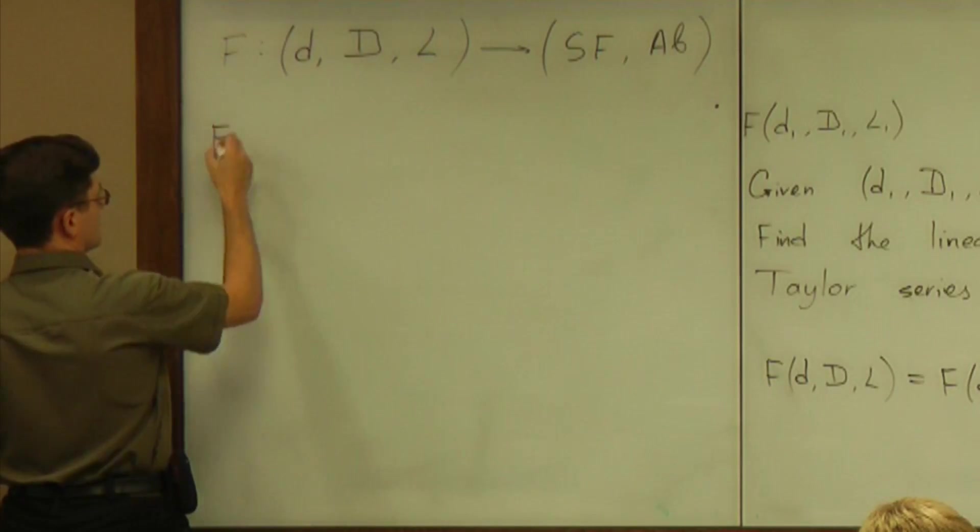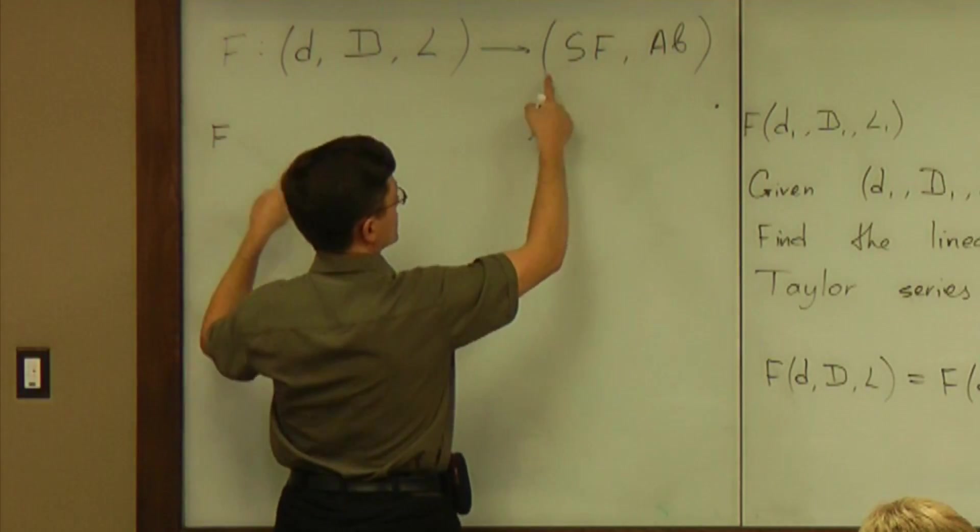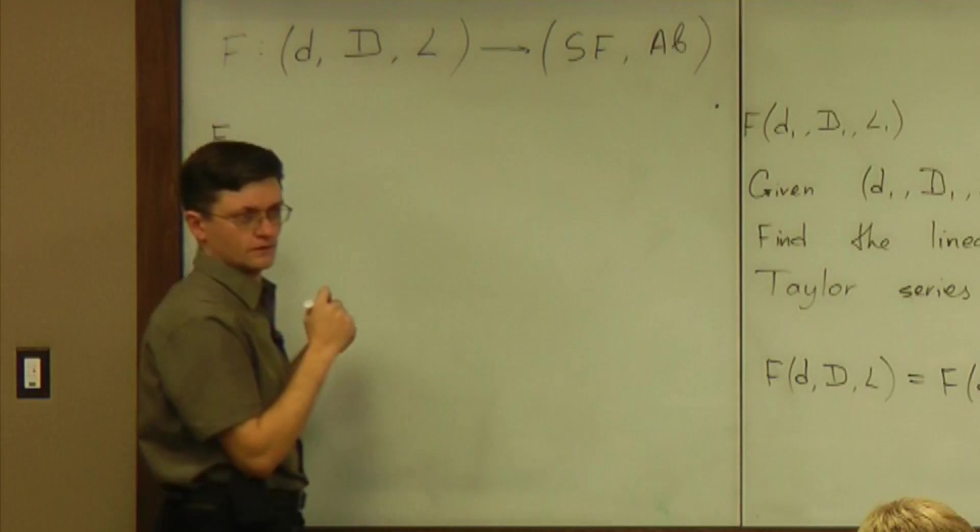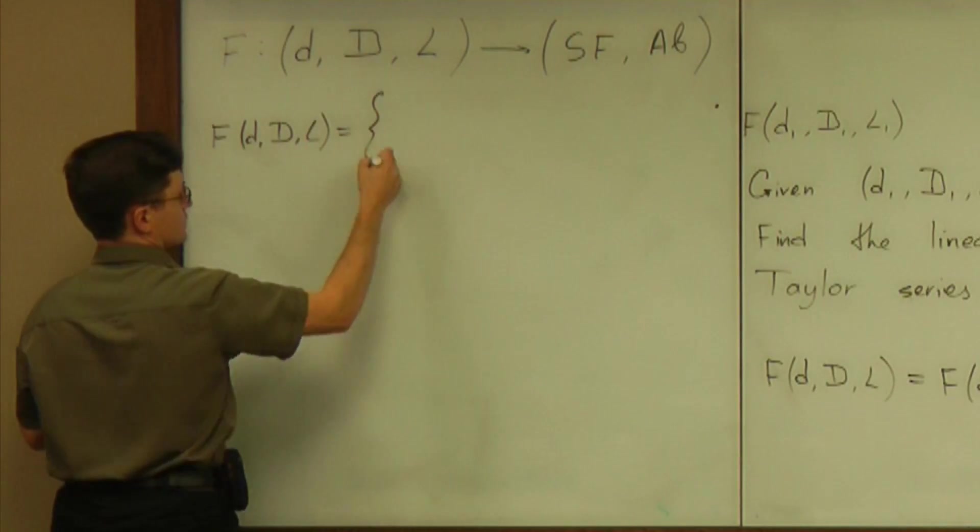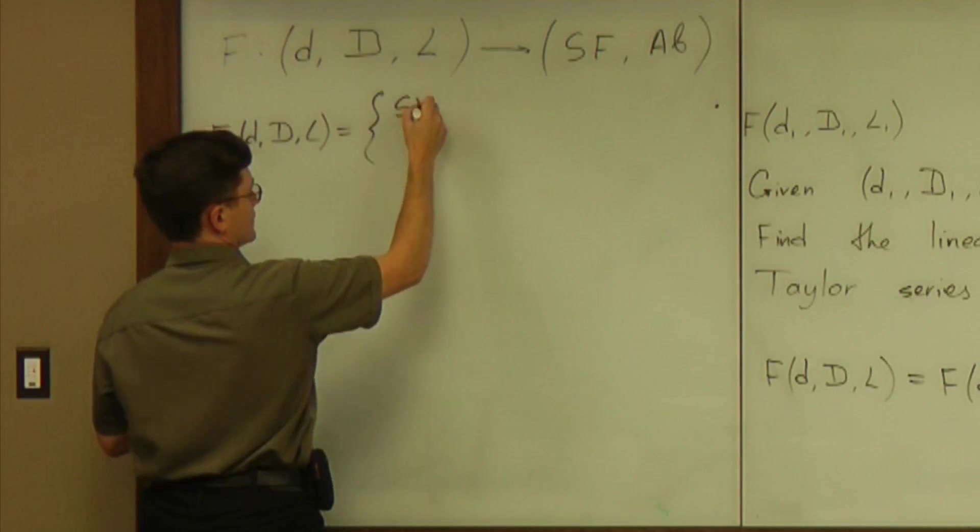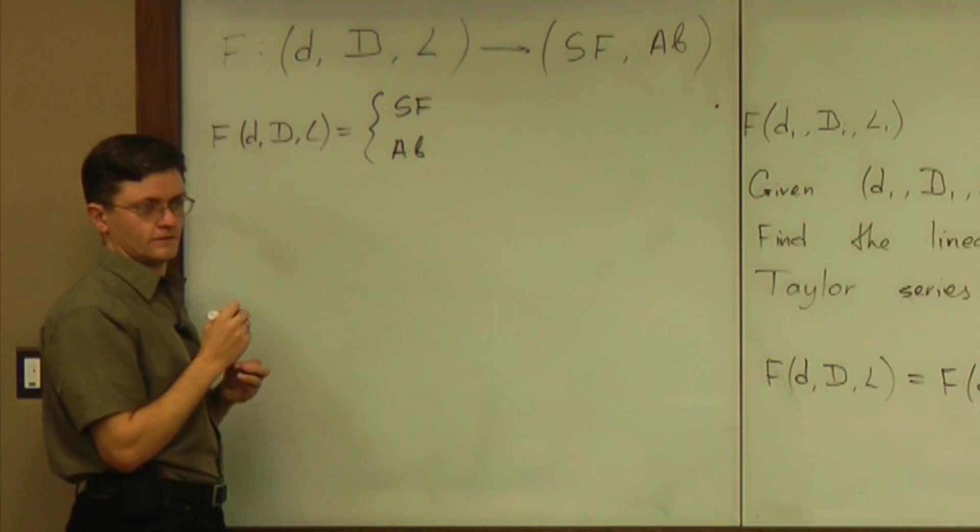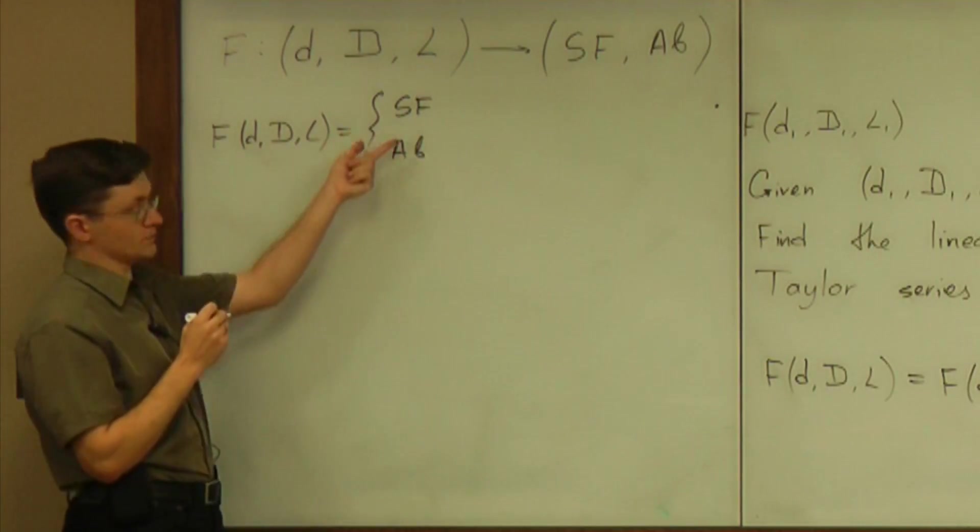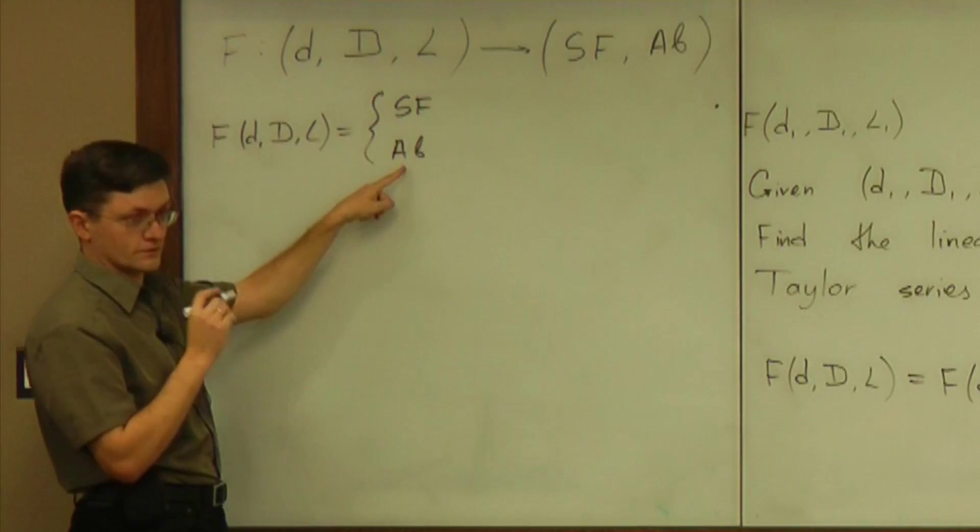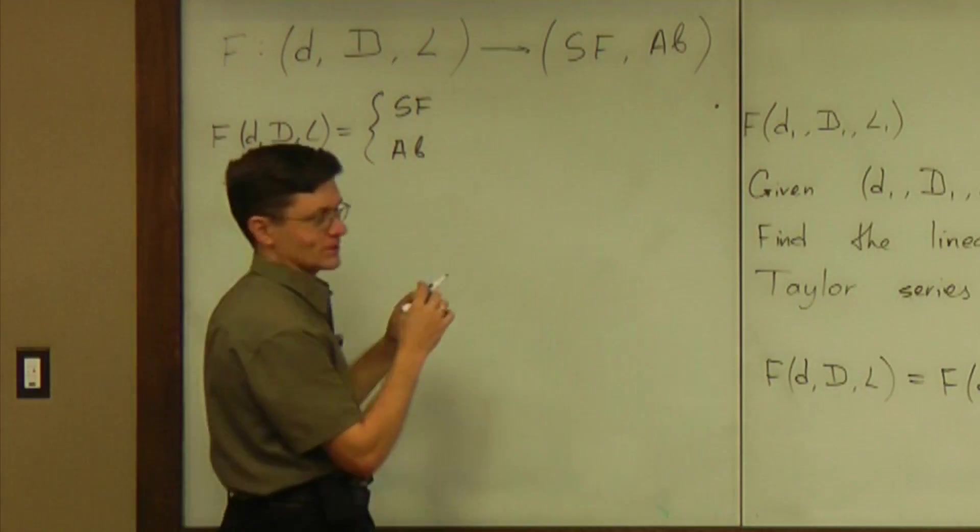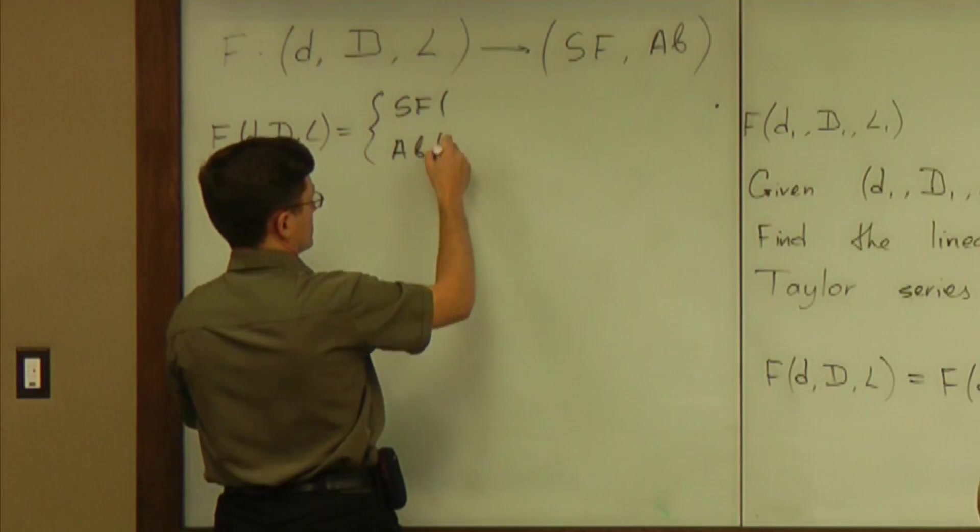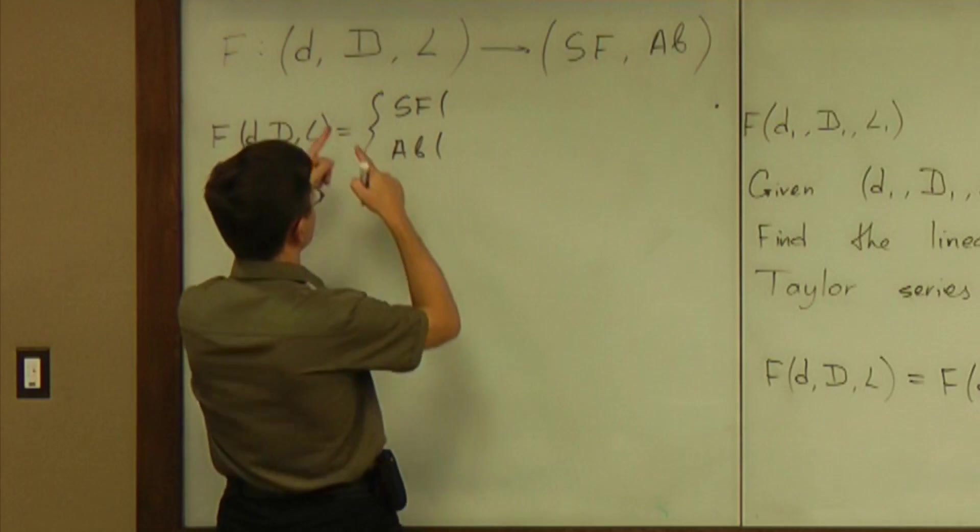So the F is actually—well, the value of F is going to be a pair. So F of D, D, L is actually a pair: SF and avoid buckling. And the output of F is a pair of numbers. Now these are numbers. Now we are safe having one variable to take care of. But each of these two numbers depend on three variables.